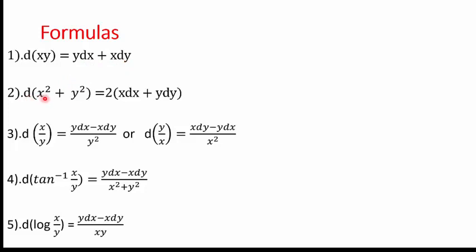In the second formula, if we differentiate X² + Y², we get 2X dX + 2Y dY, which we write as 2(X dX + Y dY). In the third formula, differentiating the quotient X/Y using the quotient rule: numerator is X, denominator is Y, giving d(X/Y) = (Y dX − X dY) / Y². Similarly, d(Y/X) = (X dY − Y dX) / X².